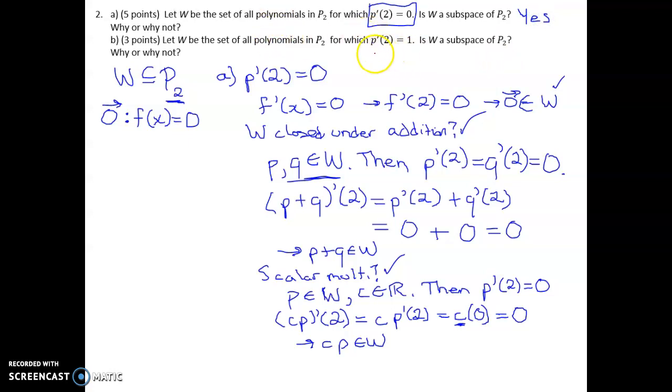Now, part B, if we require that the derivative at 2 is 1 instead of 0, all three of these conditions are going to fail. But to show that something is not a subspace, you can just pick any one of these and show that it fails. Since the requirement for W to be a subspace by that theorem, that shortcut theorem says if you can prove that just all three of these properties hold for the subset, then it is a subspace. All three of those properties have to hold. So if any of them fail, it's not a subspace.